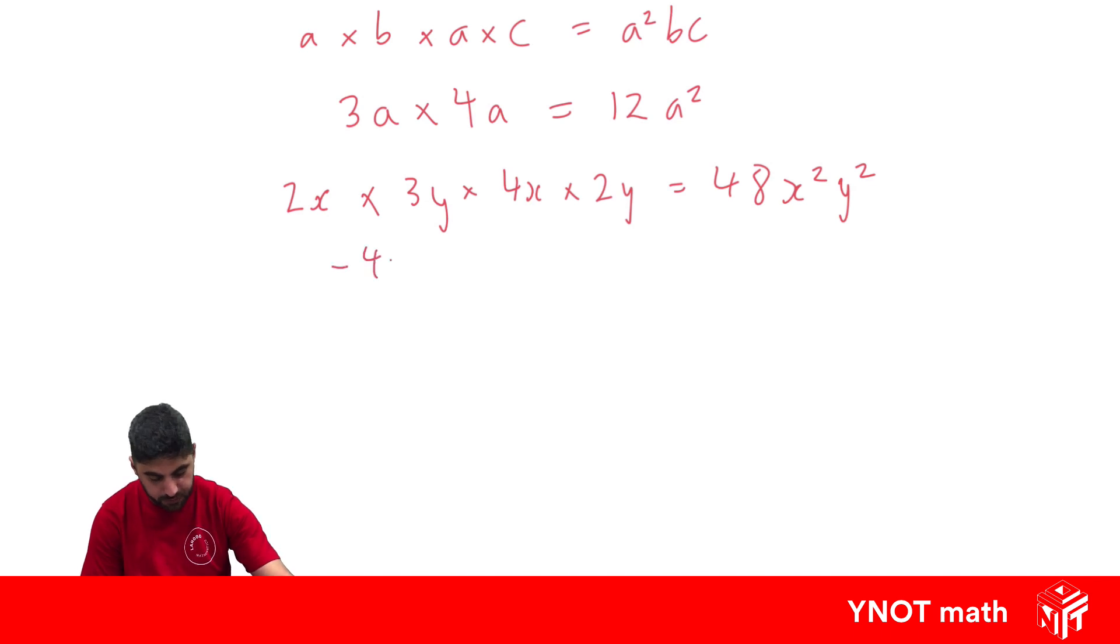What about minus 4x times minus 3x. This time we've got a negative times a negative. And a negative times a negative, remembering our integer rules, gives us a positive. And 4 times 3 is 12. So we get positive 12. Then deal with the pronumerals. x times x is x squared.